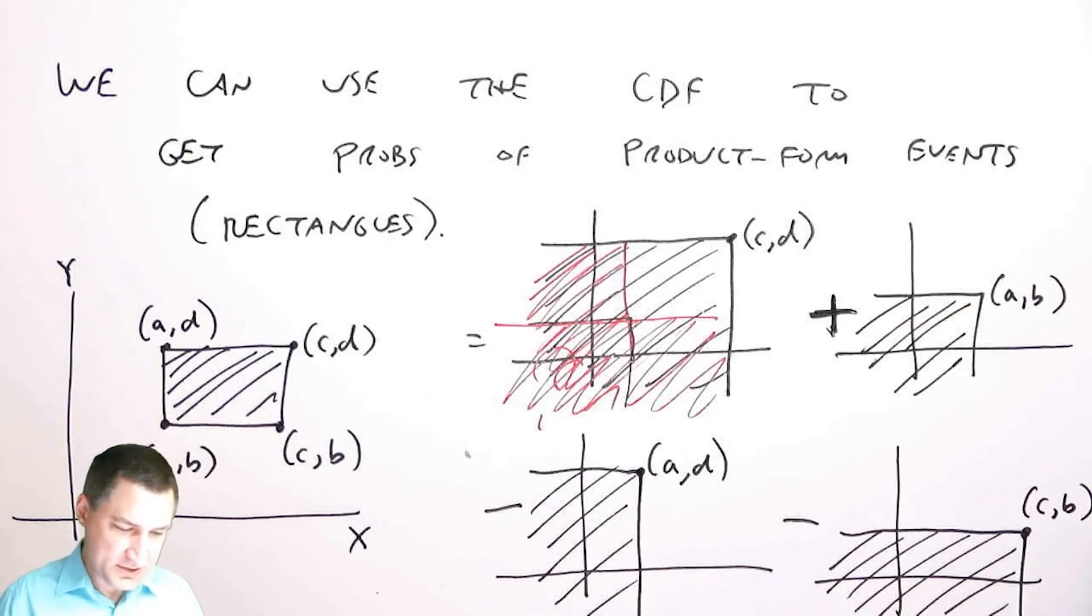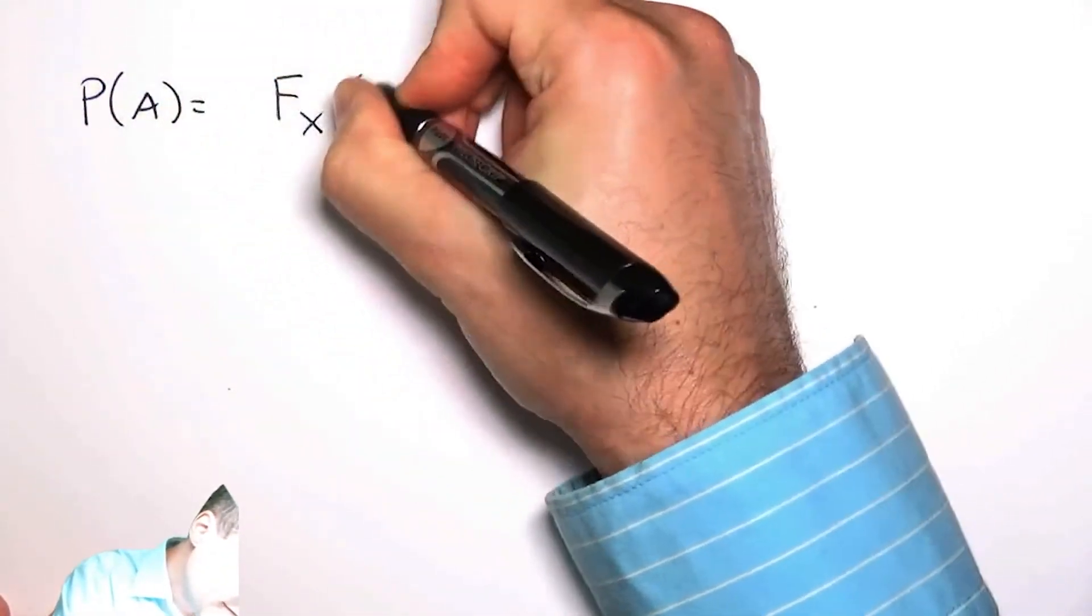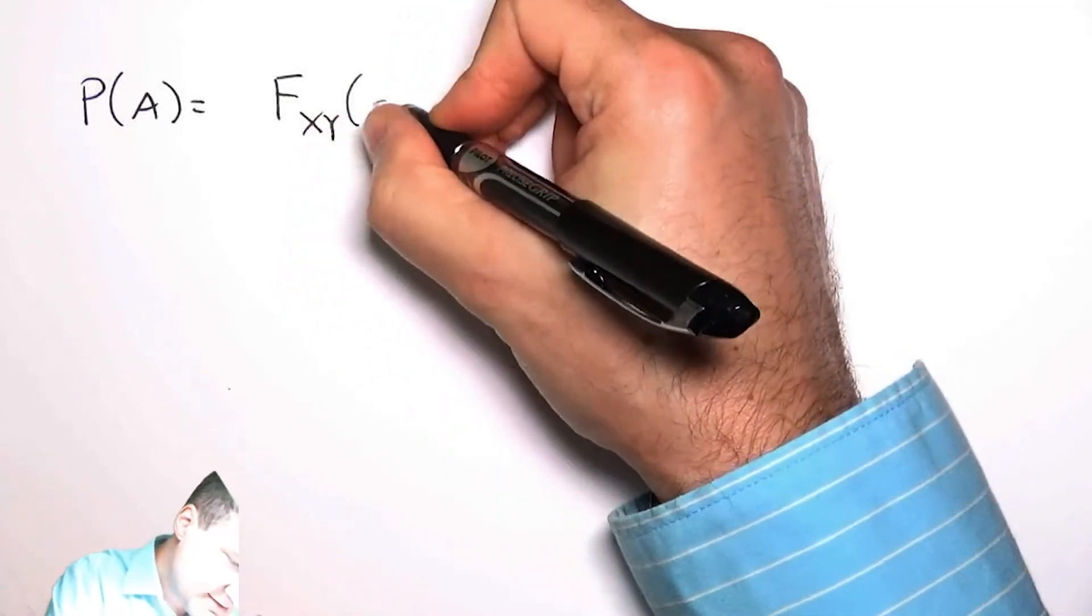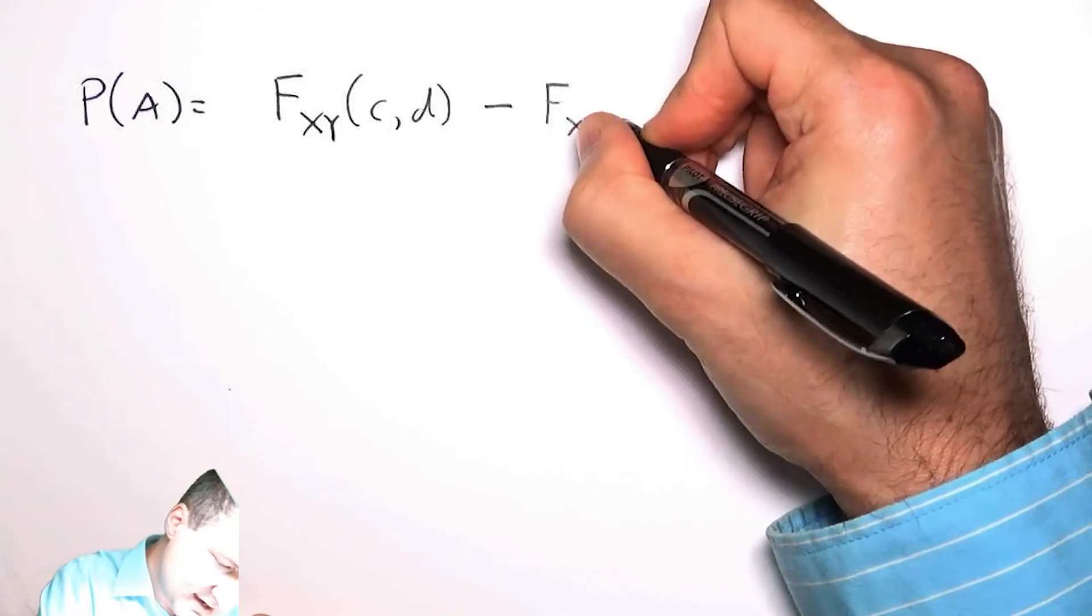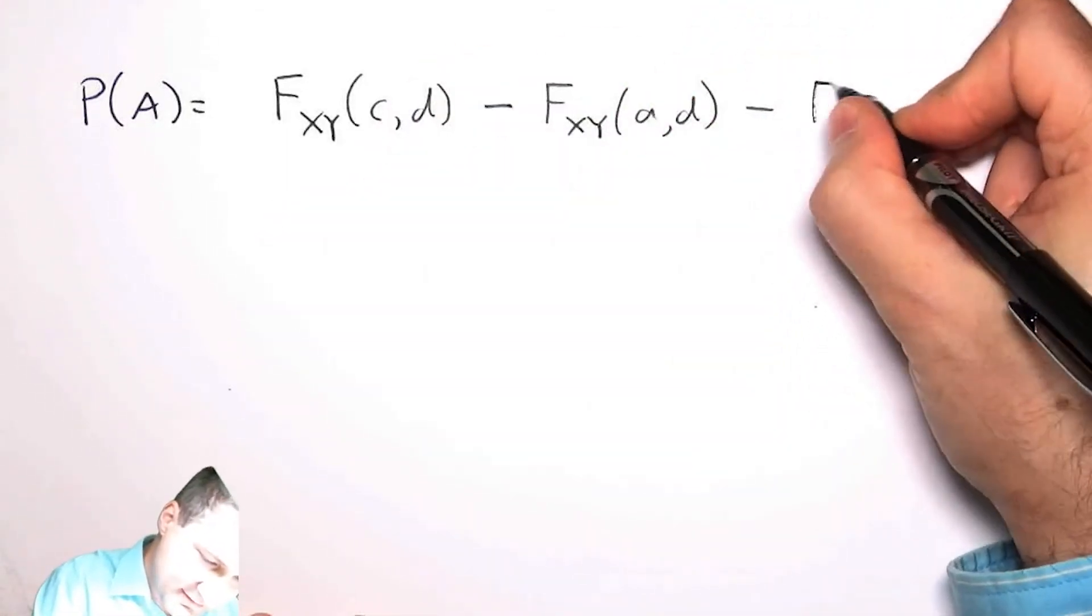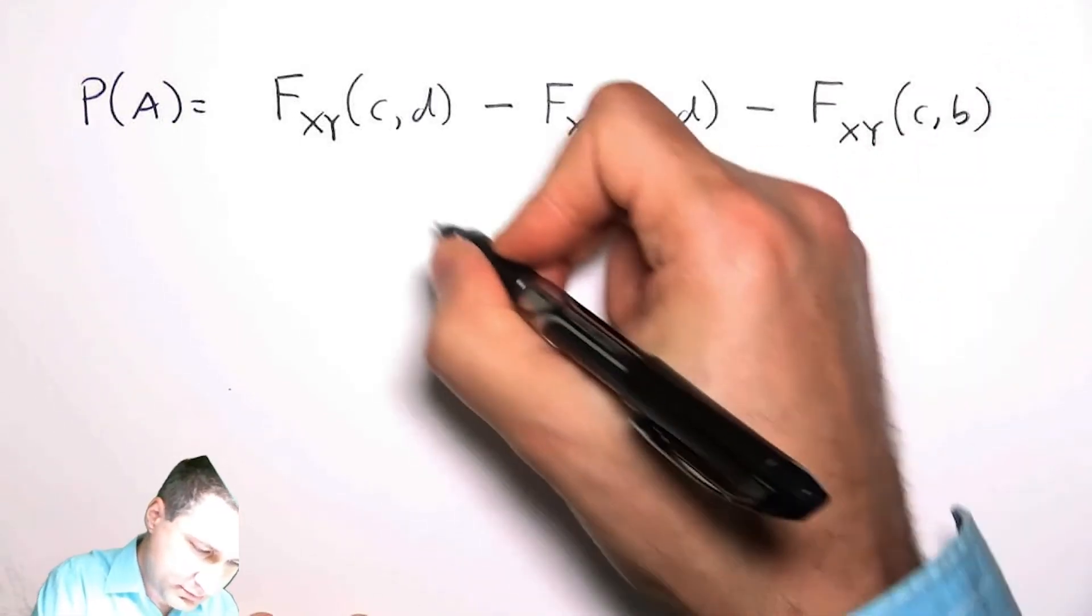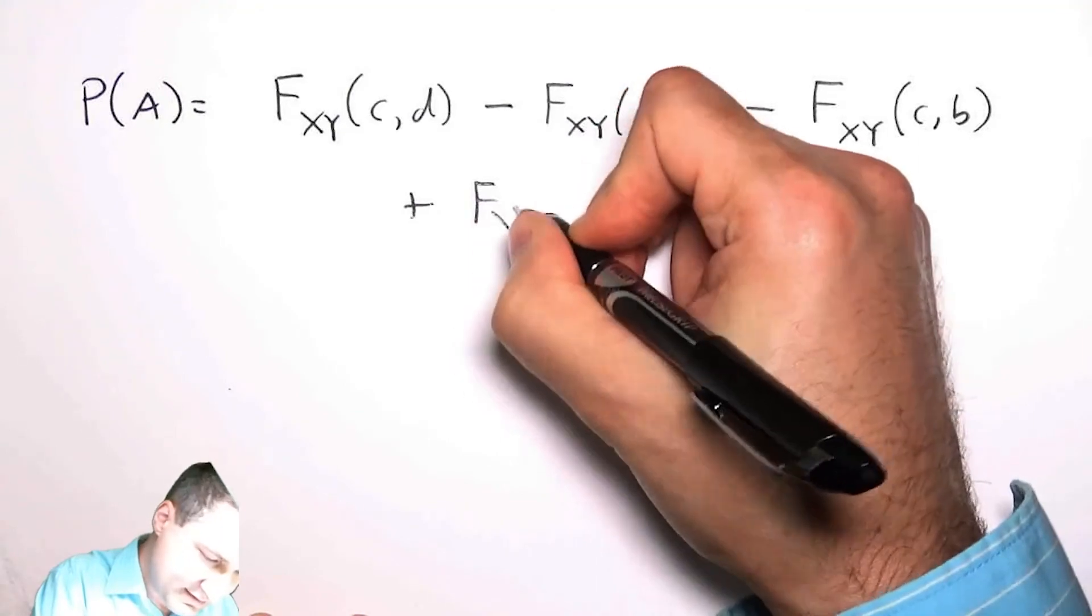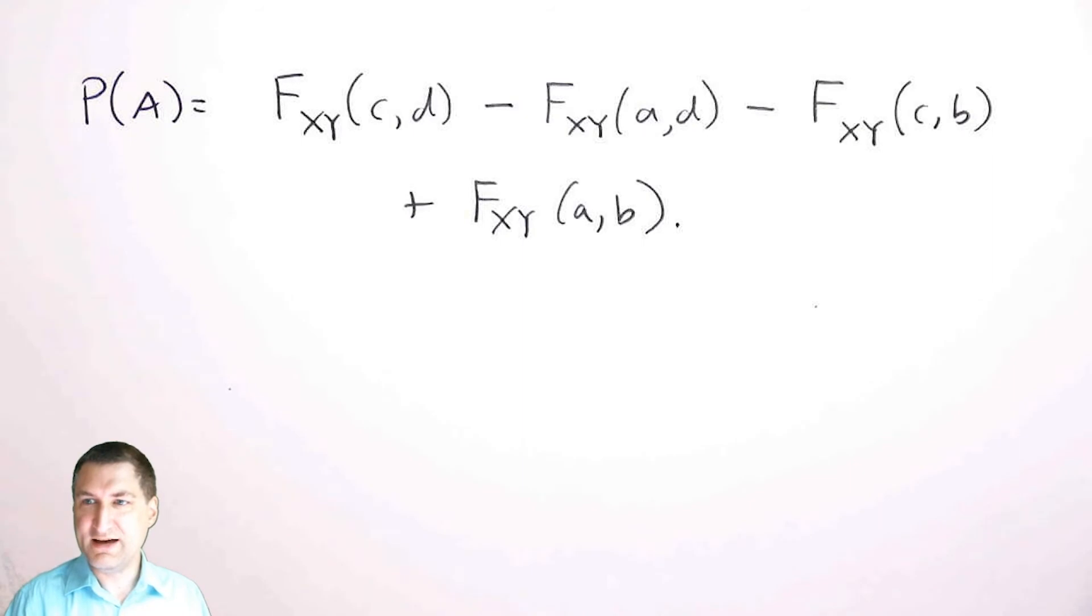Let me write this picture in a slightly better way. This is like saying that the probability of that event is the CDF at c comma d, minus the CDF at a comma d, minus the CDF at c comma b, plus the CDF at a comma b. So if all I had was a CDF, then I could use it to get probabilities of events.